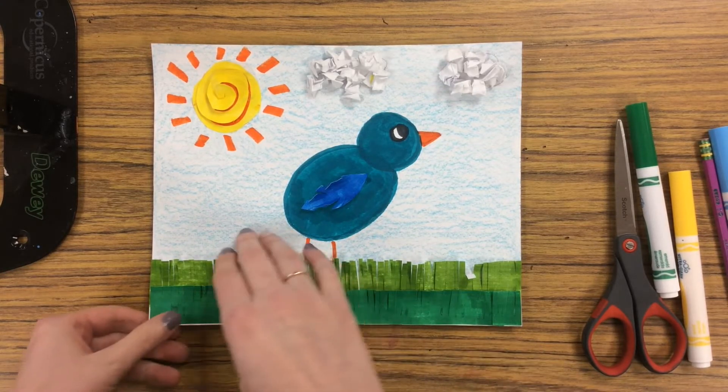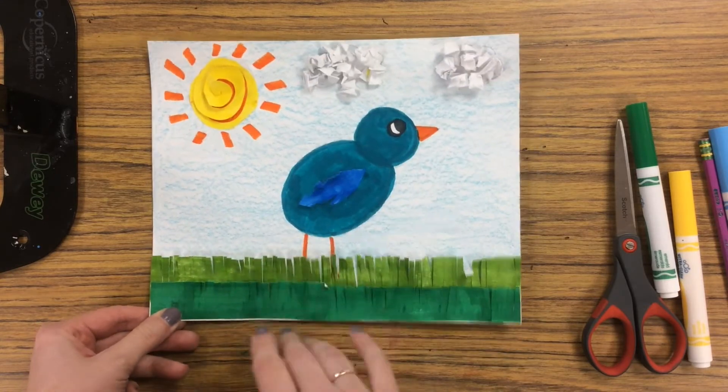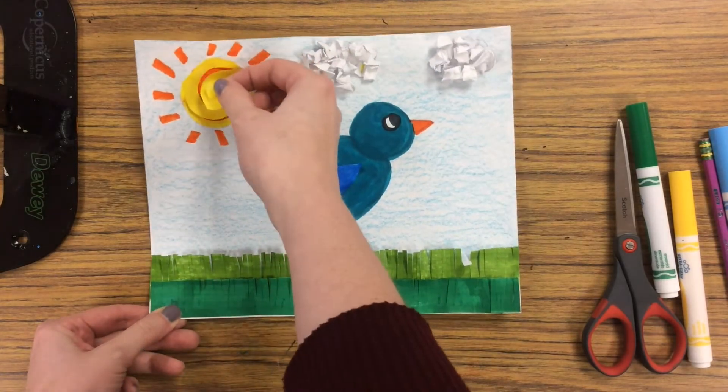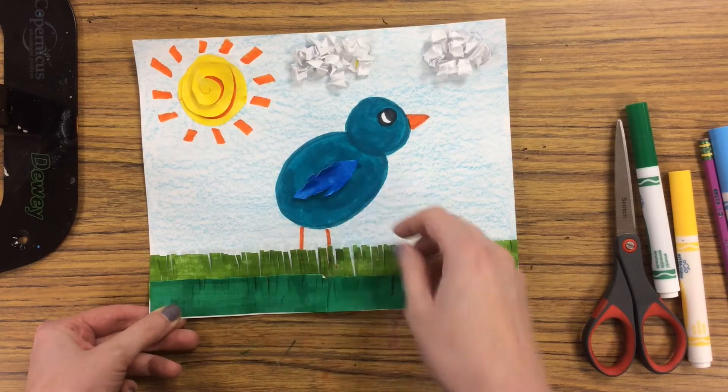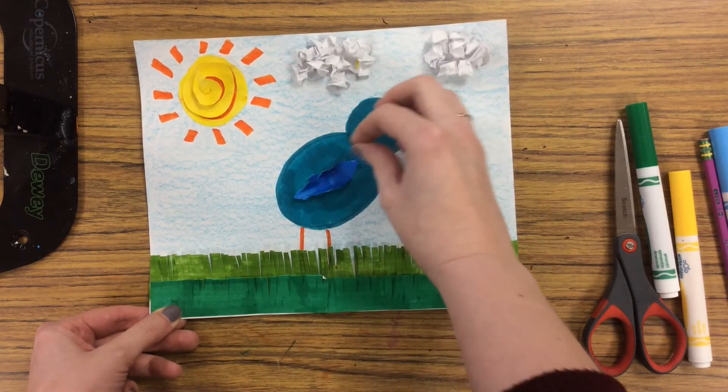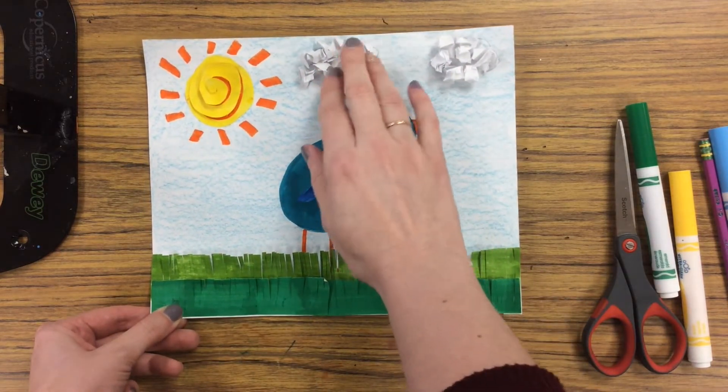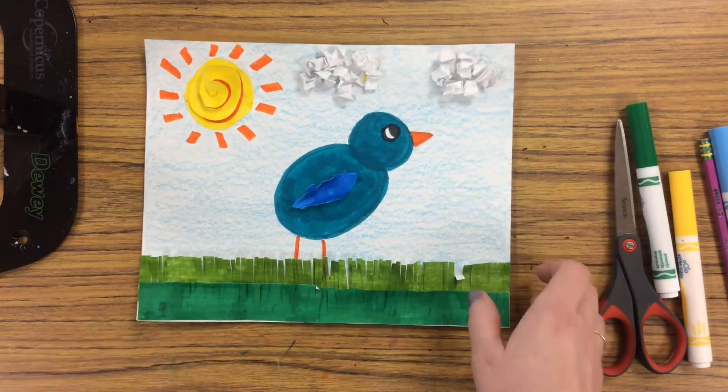We're going to be looking at how to do some fringe with paper, how to create a spiral that pops out, how to create a feather, and how to do some crumpled paper. So let's take a look.